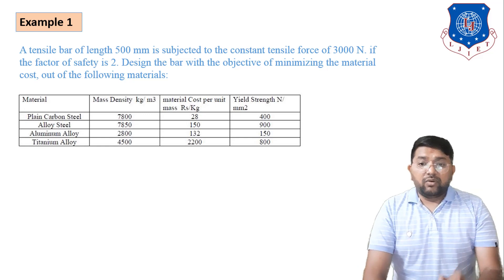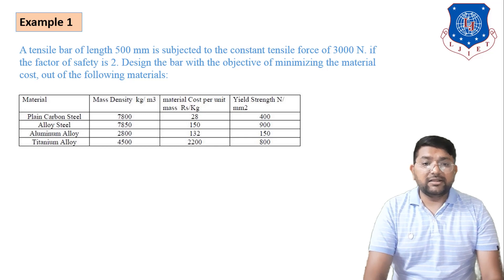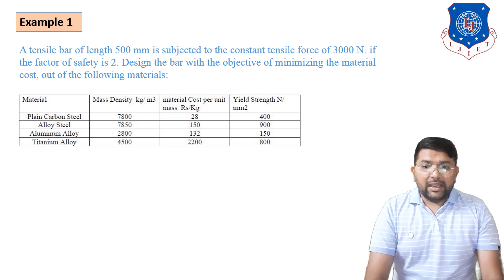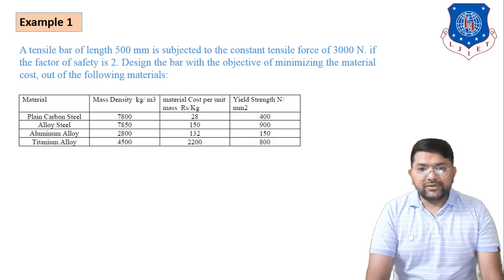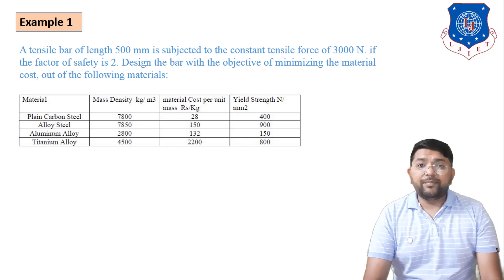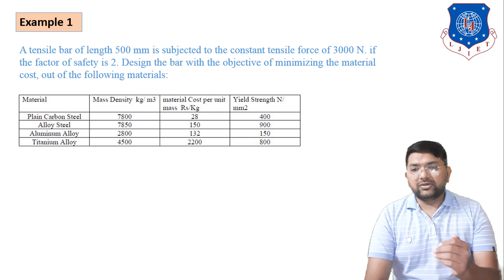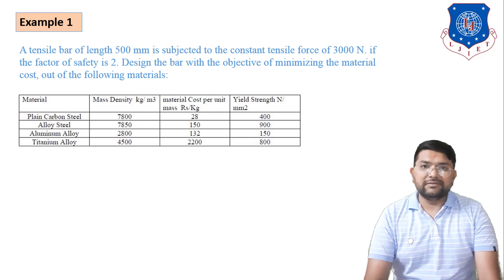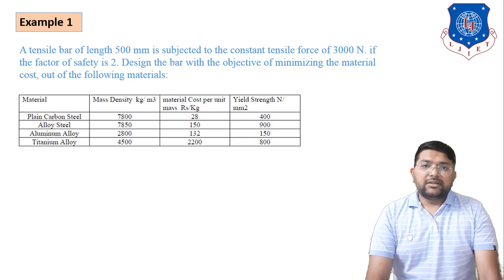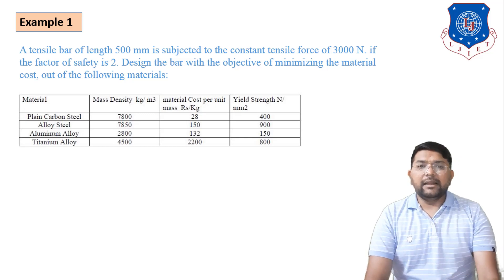For plain carbon steel: density is 7800, material cost per unit mass is 28, and yield strength is 400. For alloy steel: mass density is 7850, material cost per kg is 150, and yield strength is 900. Data is also given for aluminum alloy and titanium alloy. The three values given for each material are density, material cost per kg, and yield strength.